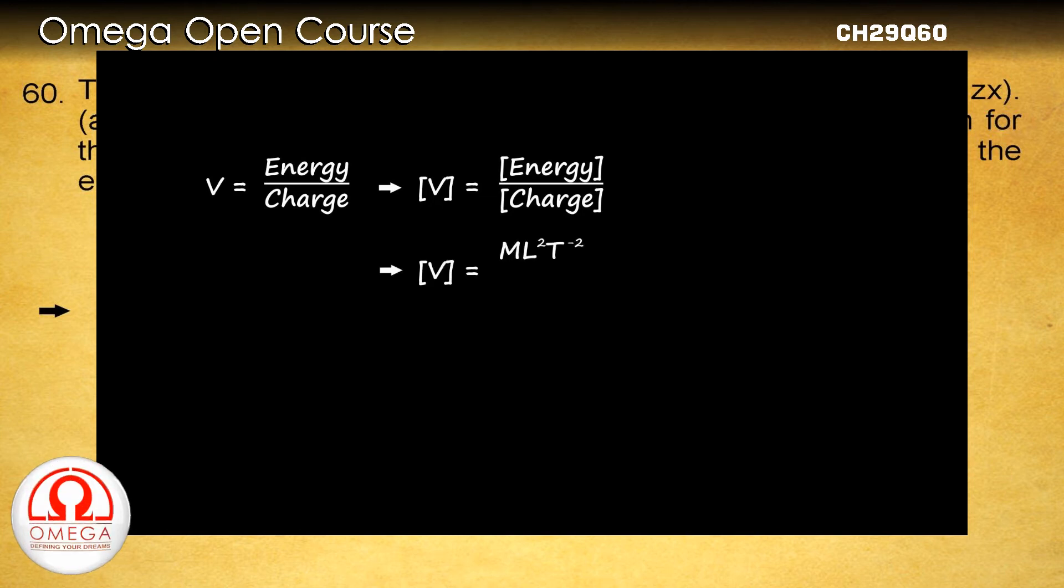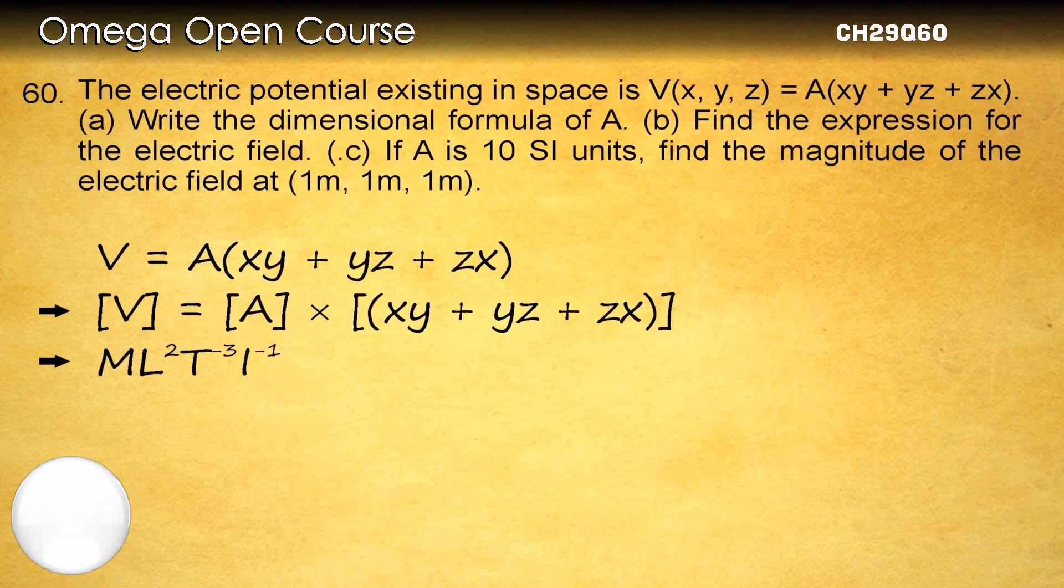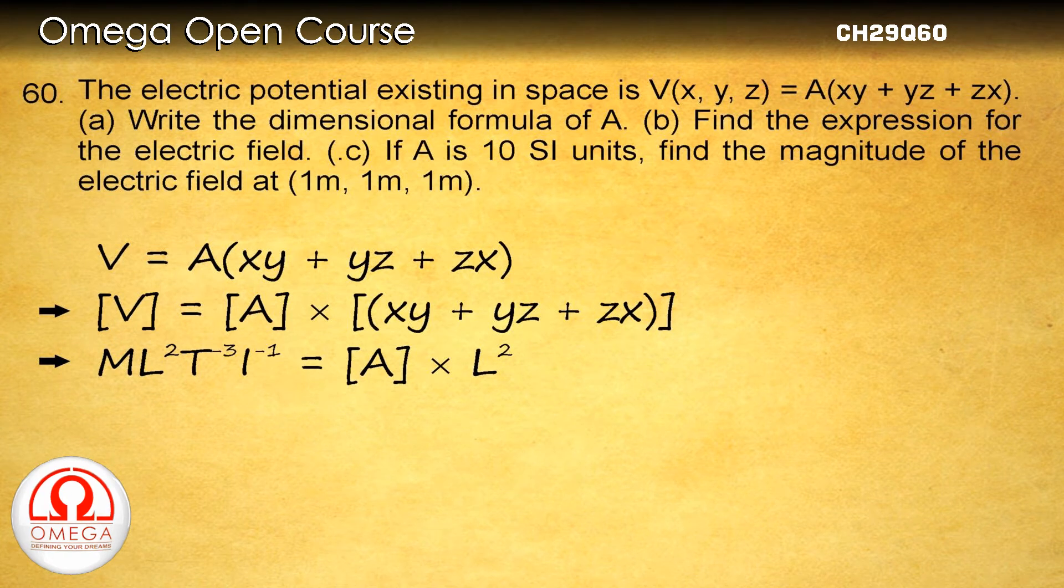Dimension of energy is ML² T⁻² and dimension of charge is IT. Thus the dimension of V is ML² T⁻³ I⁻¹. Since xyz are coordinates of a point, they have the dimension of length. Therefore the dimension of each of xy, yz and zx is L².